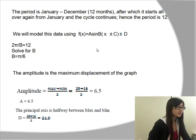To find the amplitude, A, it is the maximum displacement of the graph. So how high does the graph go from the original point? To find out the amplitude, we take the maximum value minus the minimum value, then divide it by 2.